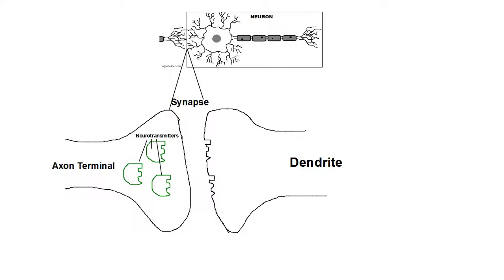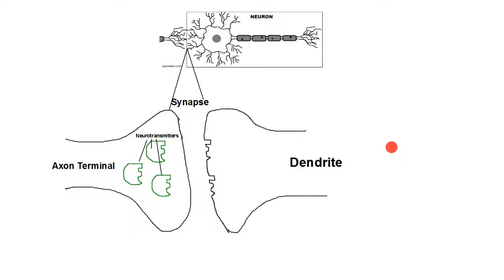So we have this neurotransmitter with a little square, a circle, and a triangle — it's like a key and a lock. This key goes from the axon terminal, into the synapse, floats around in the goo, and then fits into the lock. If it successfully fits into the lock, it sends a signal through the dendrite to the cell body, and then it goes on.